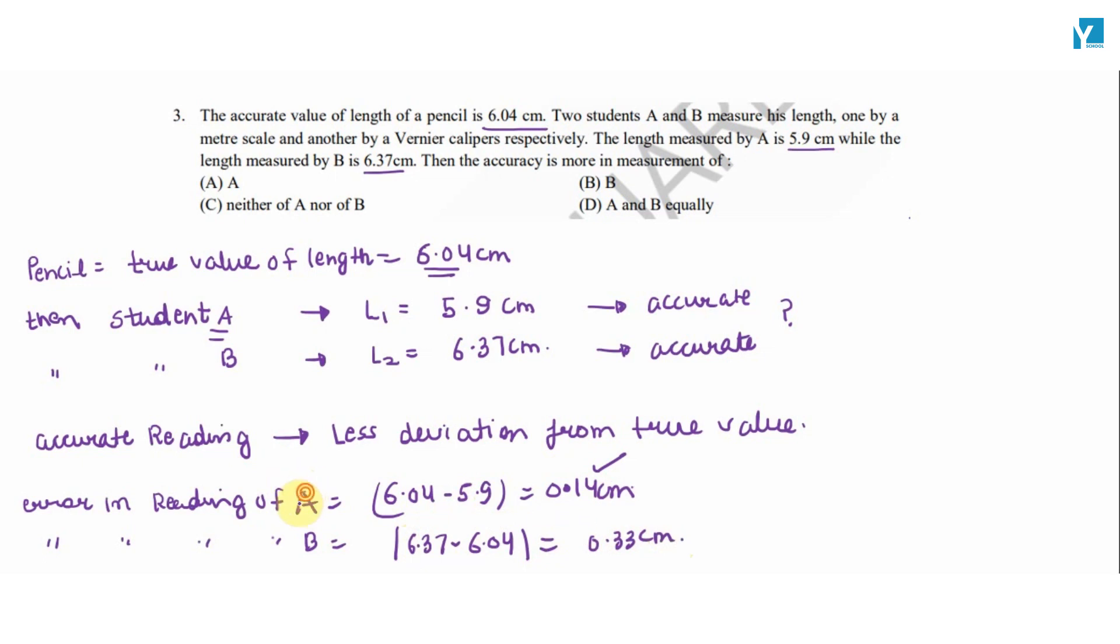A's reading is closer to the true value. The deviation is less.